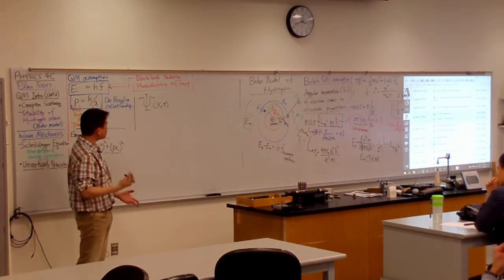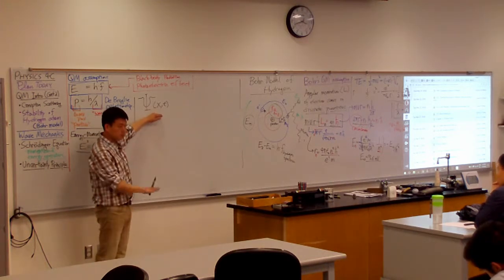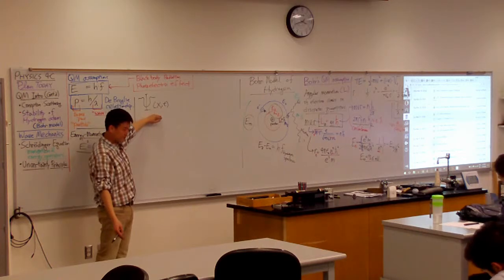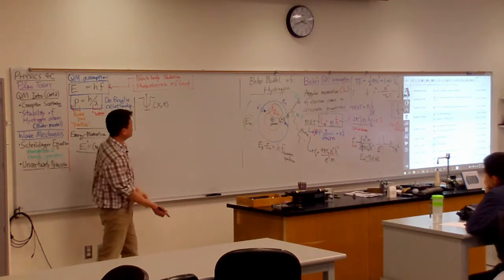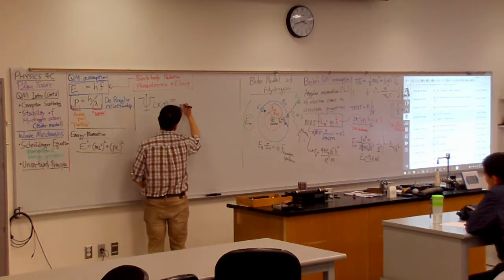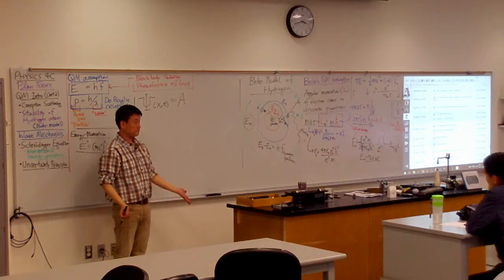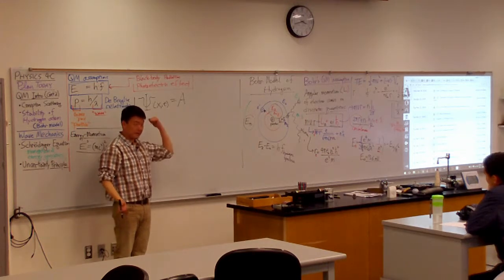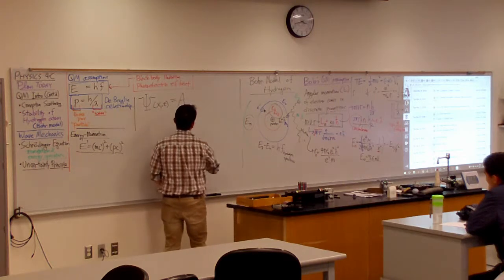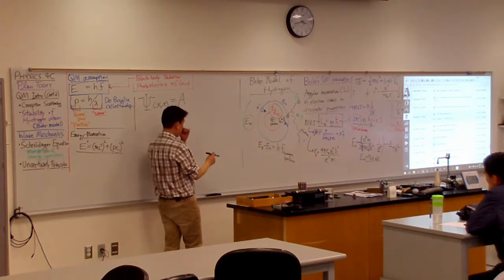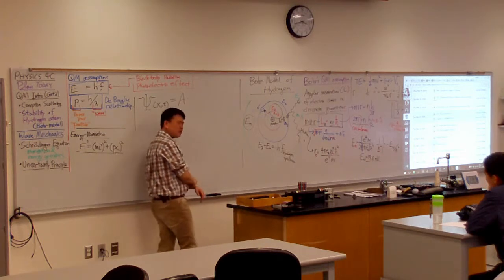So, our starting place is that this electron can be treated like a wave. So there's a wave function that can be associated with the electron. I'm going to say it's a plane wave, which means it must have some kind of amplitude. Whatever this amplitude means, it has some kind of amplitude. Times the plane wave function.